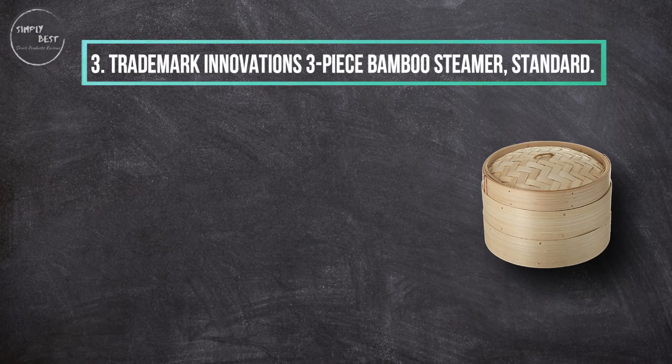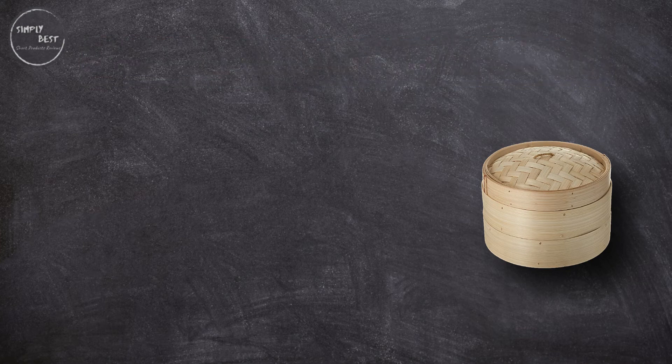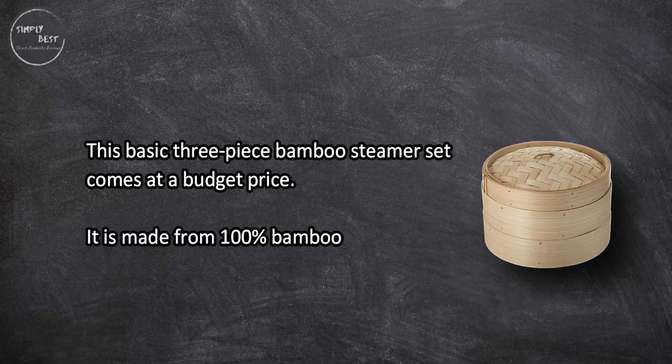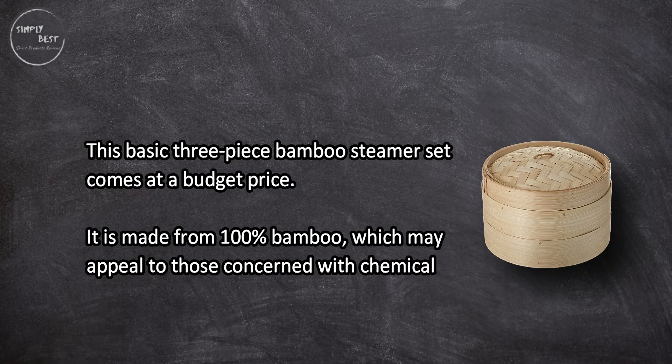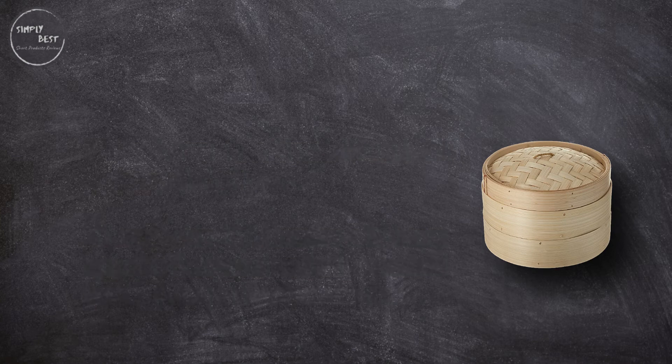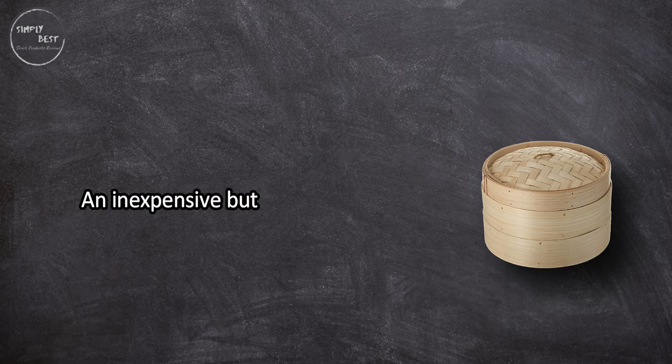This basic three-piece bamboo steamer set comes at a budget price. It is made from 100% bamboo, which may appeal to those concerned with chemicals leaching from plastic or metal parts. An inexpensive but sturdy all-bamboo set for steaming foods like dim sum, fish, rice, and veggies.